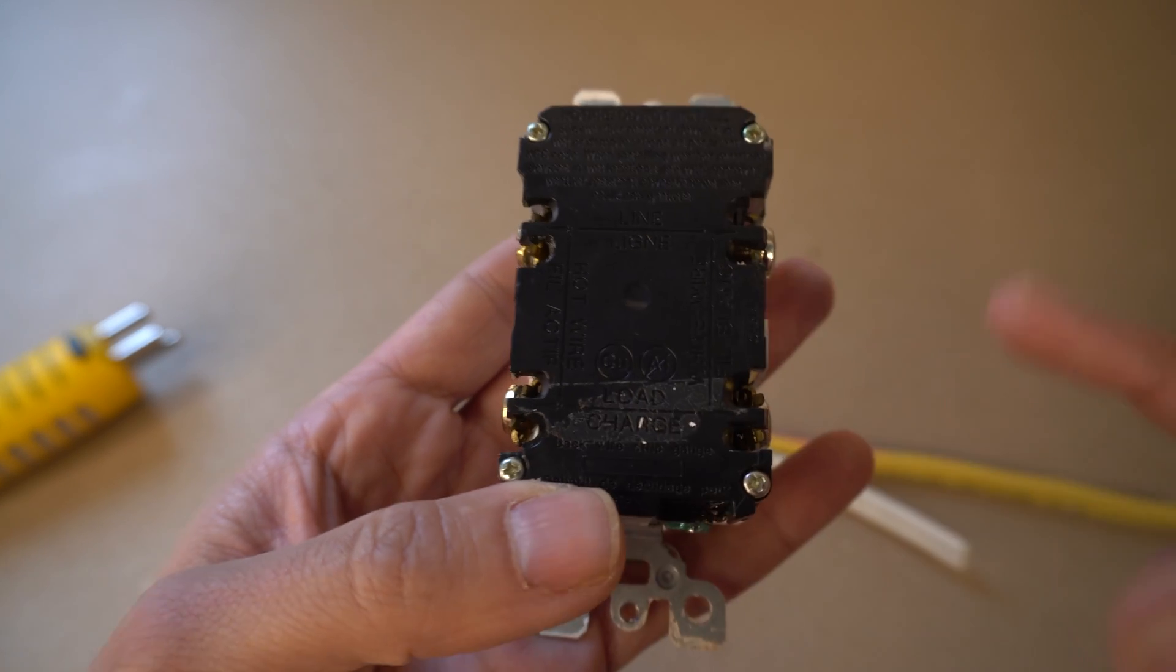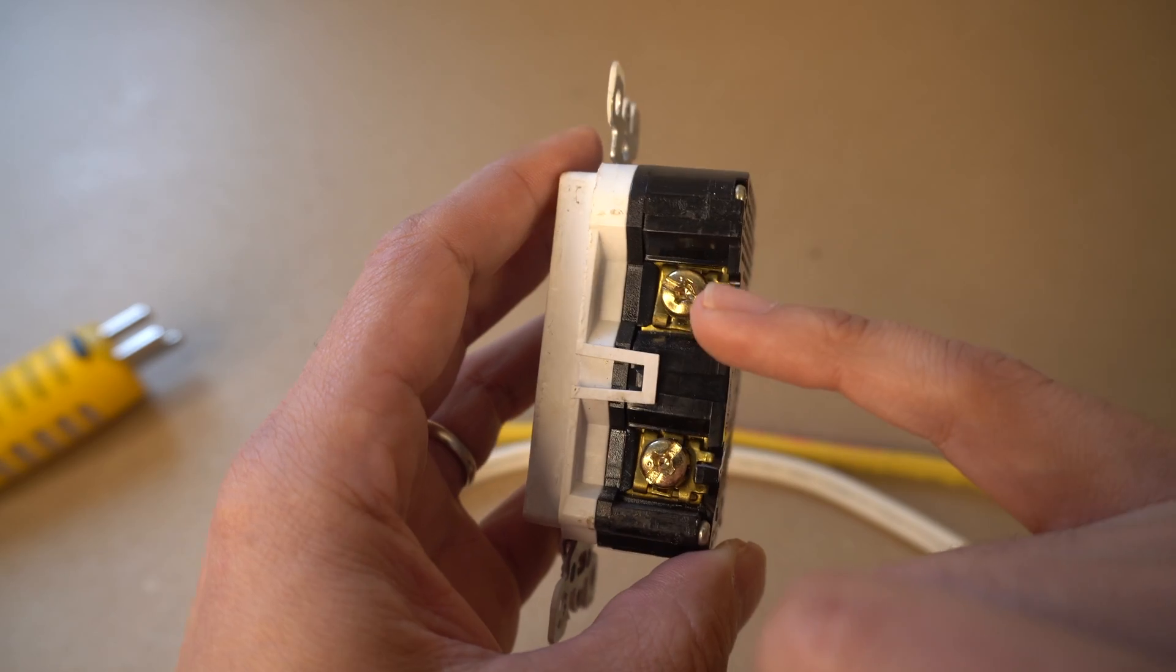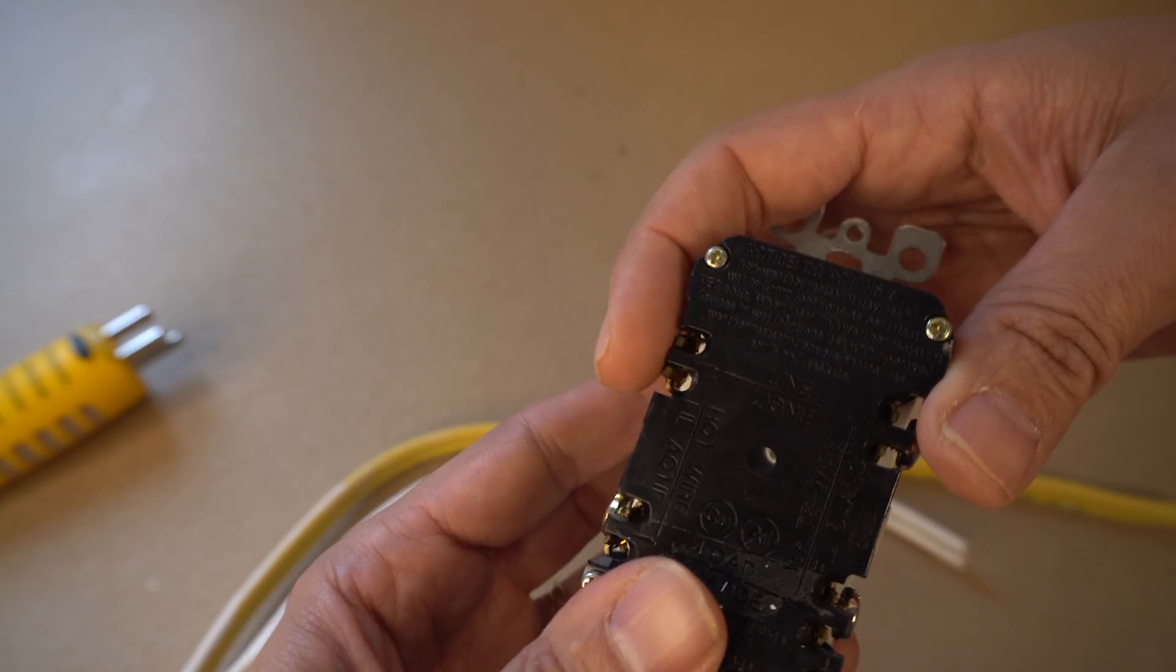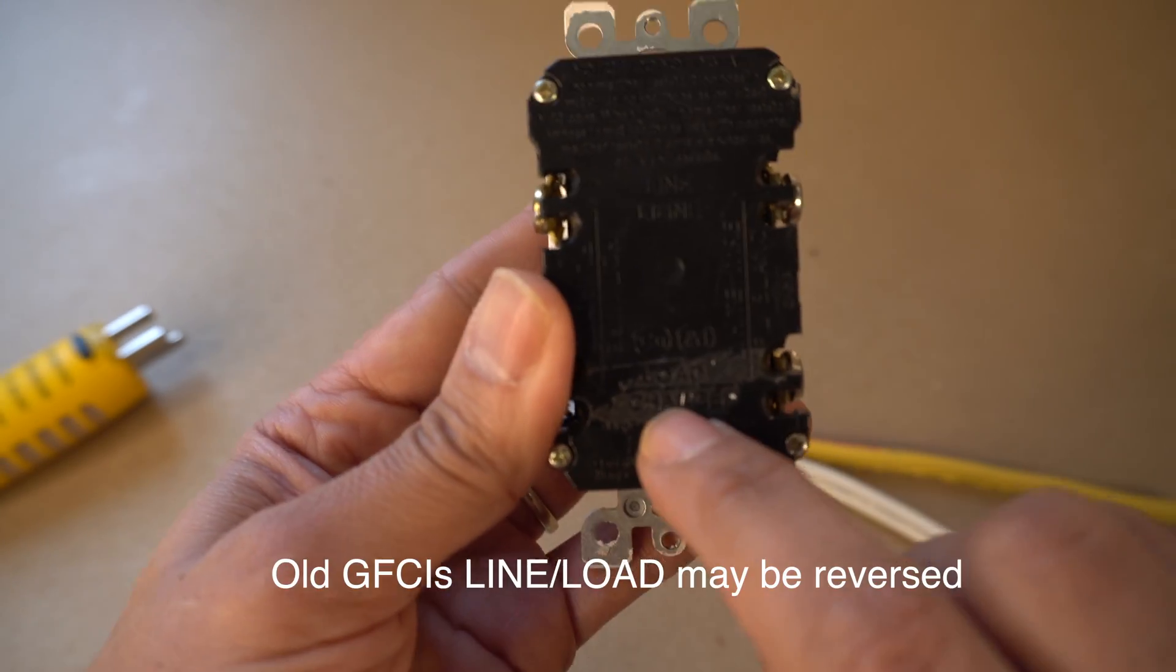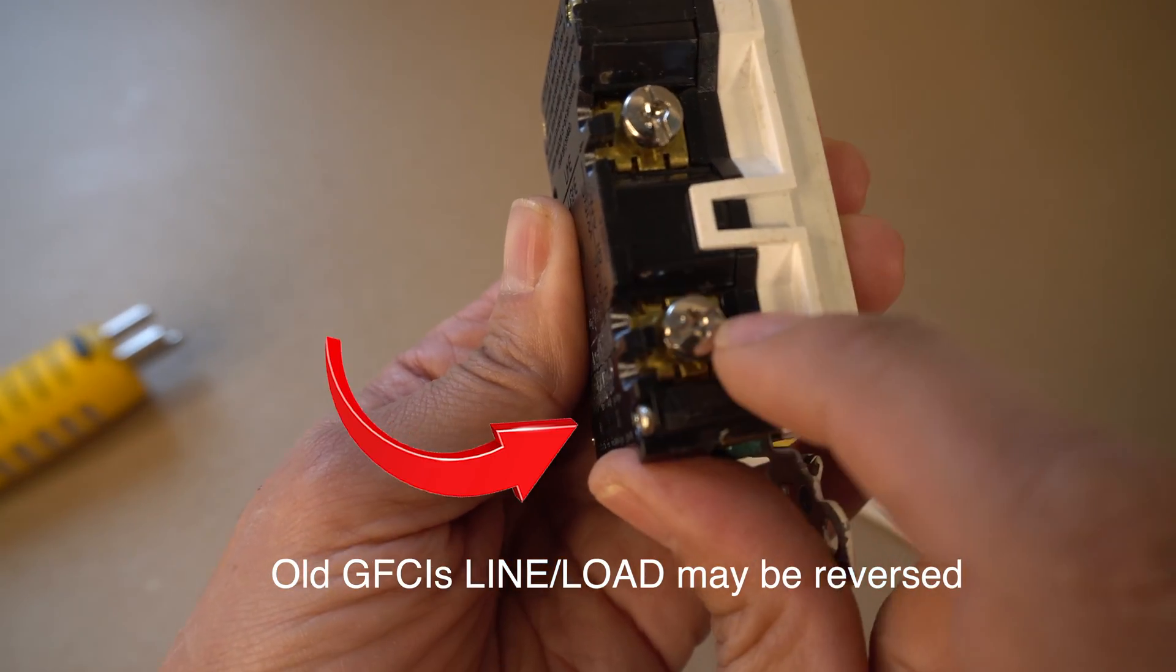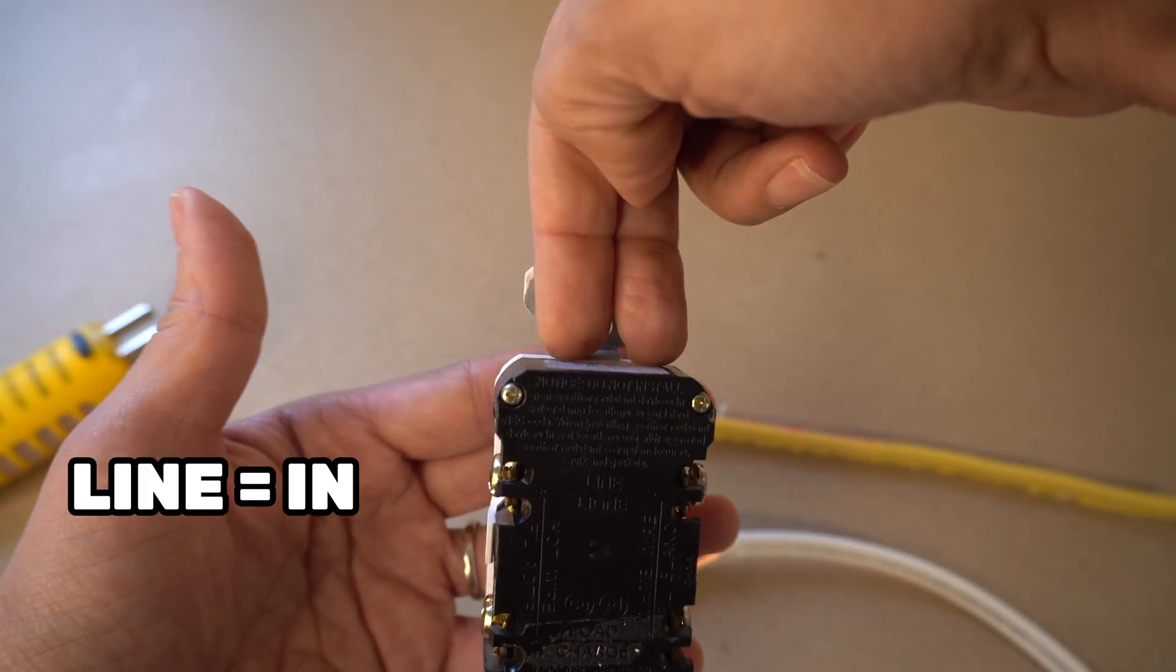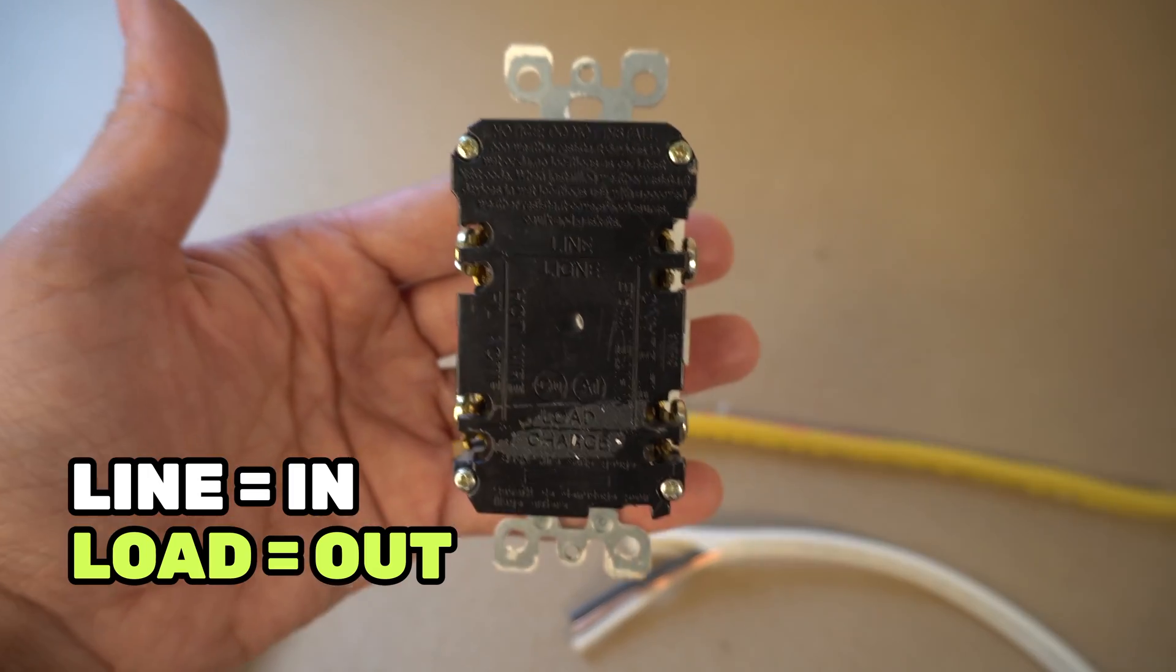This is really important. You want to take a look. It says line and the power goes in through this screw terminal at the top and this one here. So the two terminals at the top are your line, your power going in. Load is your power going out to the screw terminals right here. So critical to know. Line is the power that's going into your receptacle. Load is the power that's going out to your other receptacles downstream.